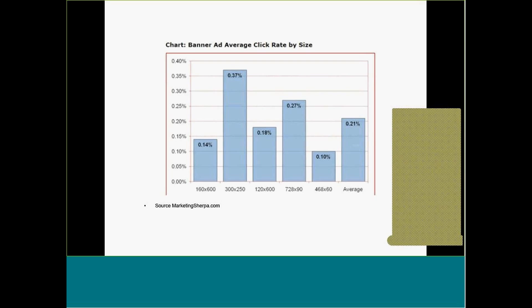There are different sizes available on websites that follow Interactive Advertising Bureau standards. First, the 160×600: the national average click-through rate is only 0.14%. The 300×250 ad has a national average click-through rate of 0.37% — almost 12–15% higher than the national average of 0.25%. The 728×90 is 0.27%, just above the national average. These figures come from MarketingSherpa — a great resource I encourage you to check out.